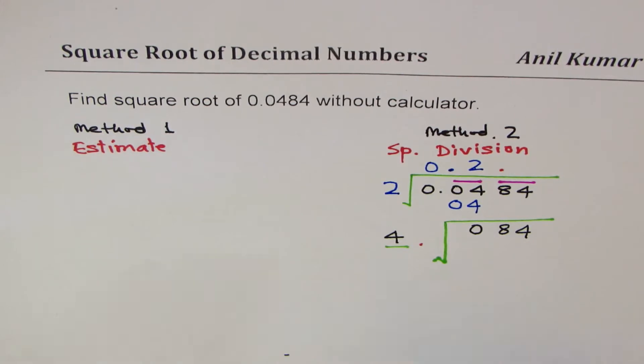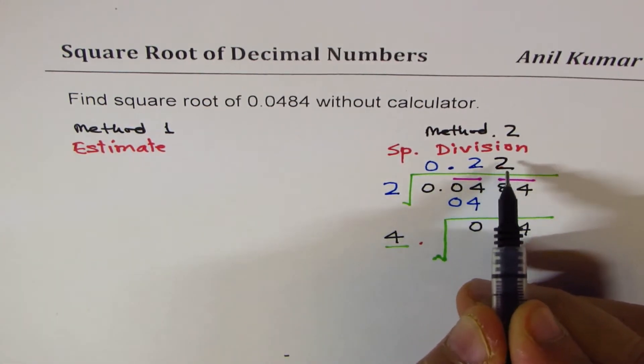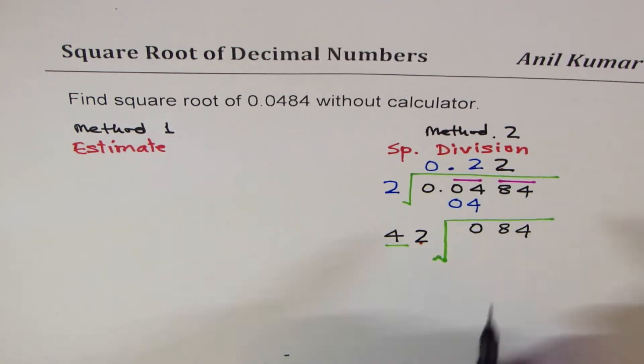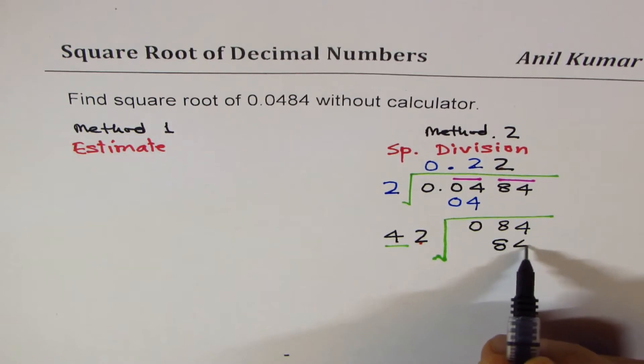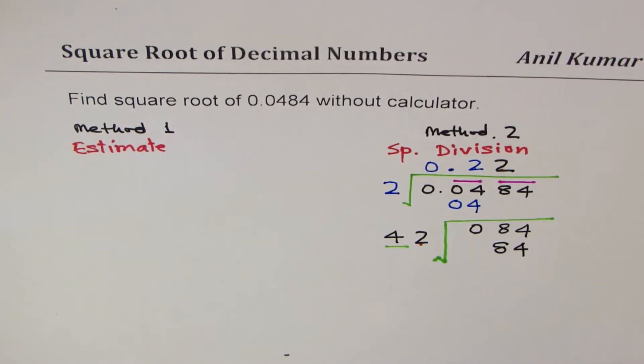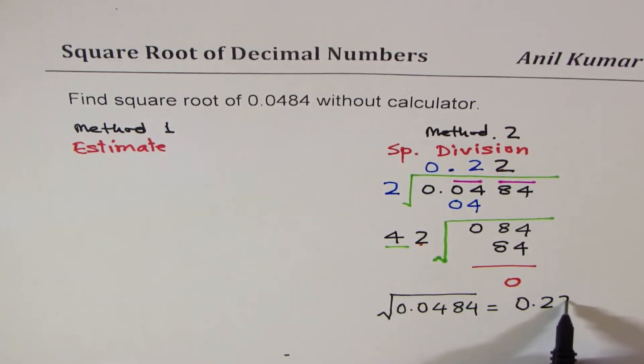It goes two times, so I'll write 2 here and we'll write 2 here also. Multiply these, so you get 84. The remainder which you get is 0. Therefore, we can write our answer that the square root of 0.0484 is equal to 0.22.